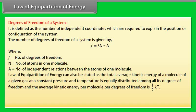Law of equipartition of energy can also be stated as the total average kinetic energy of a molecule of a given gas at a constant pressure and temperature is equally distributed among all its degree of freedom, and the average kinetic energy per molecule per degree of freedom is half KT, where T is equal to temperature of gas.